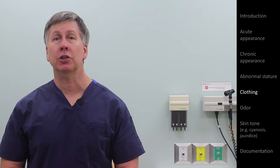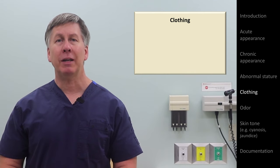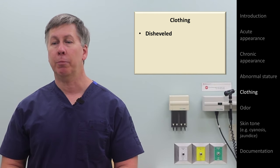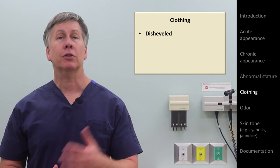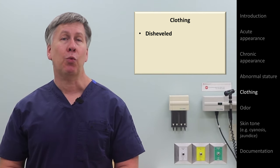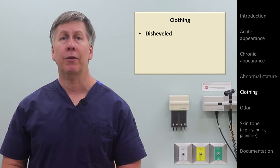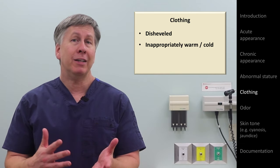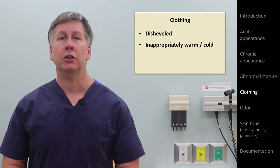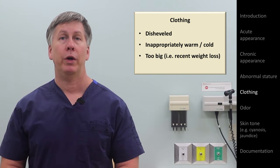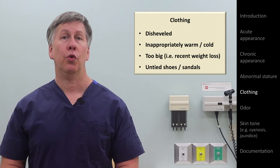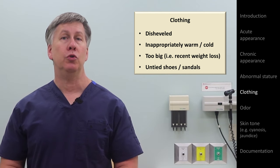If there are abnormalities of the patient's clothing, that would be included here too. The most common example is a patient in unusually disheveled or dirty clothing, which might suggest poverty, homelessness, mental illness, substance abuse, or even dementia. Other examples require next-level observation: clothes far too warm or not warm enough might suggest a temperature regulation abnormality as in thyroid disease; unusually big clothes might suggest recent weight loss; and deliberately untied shoes or sandals may indicate lower extremity edema.